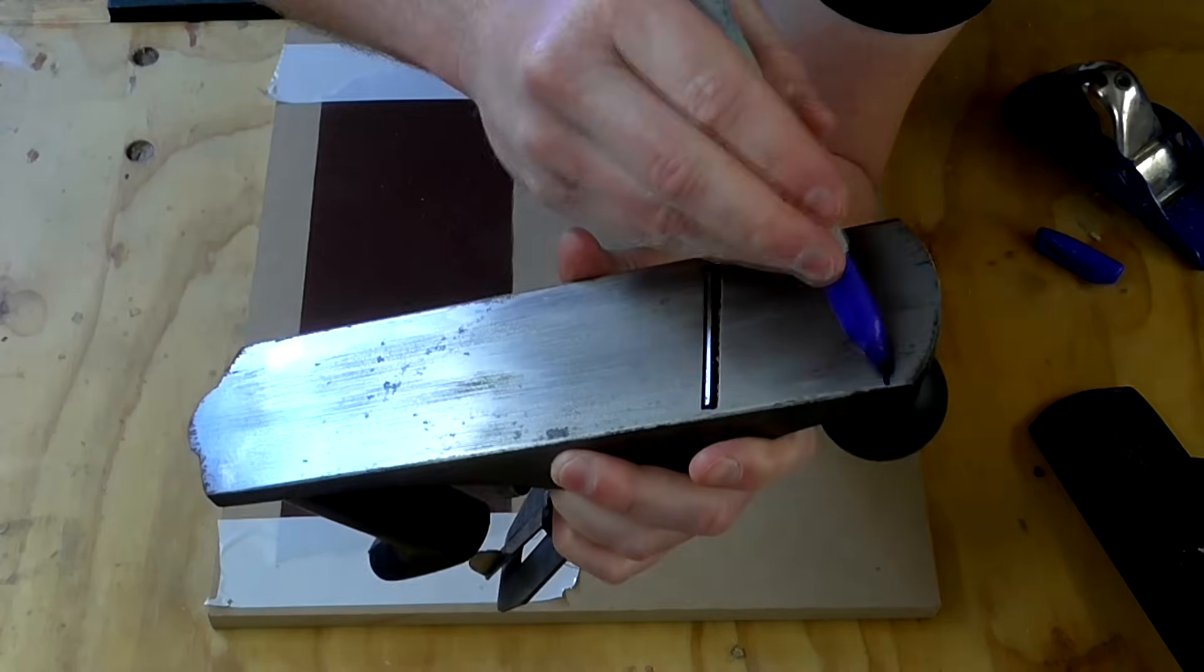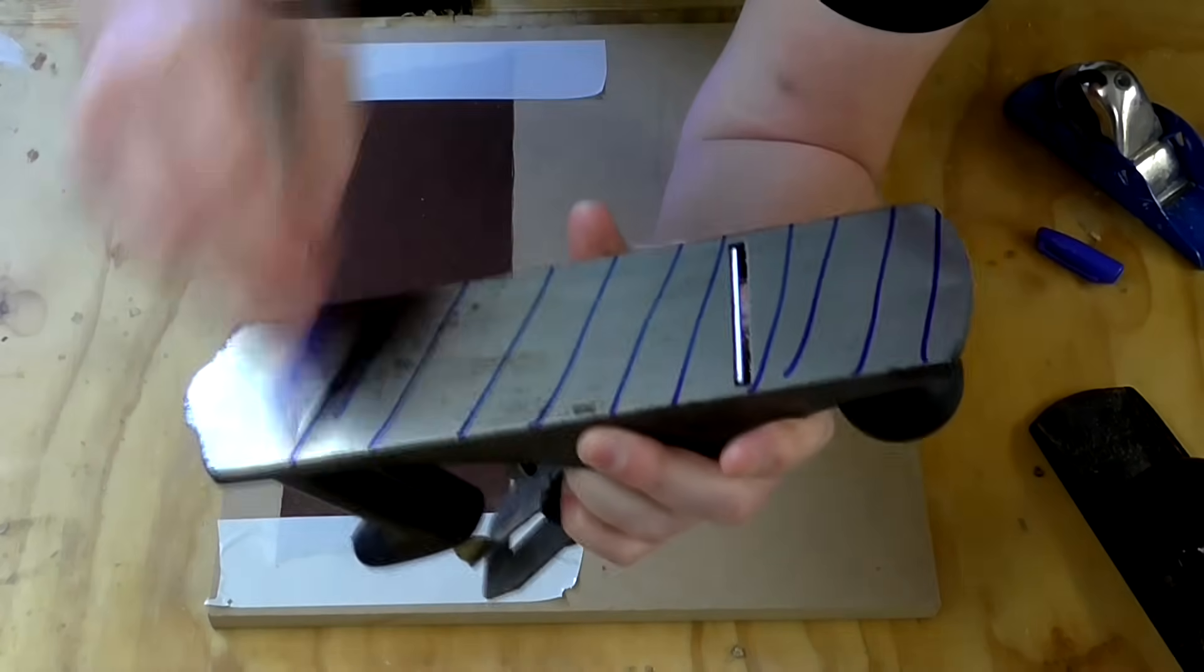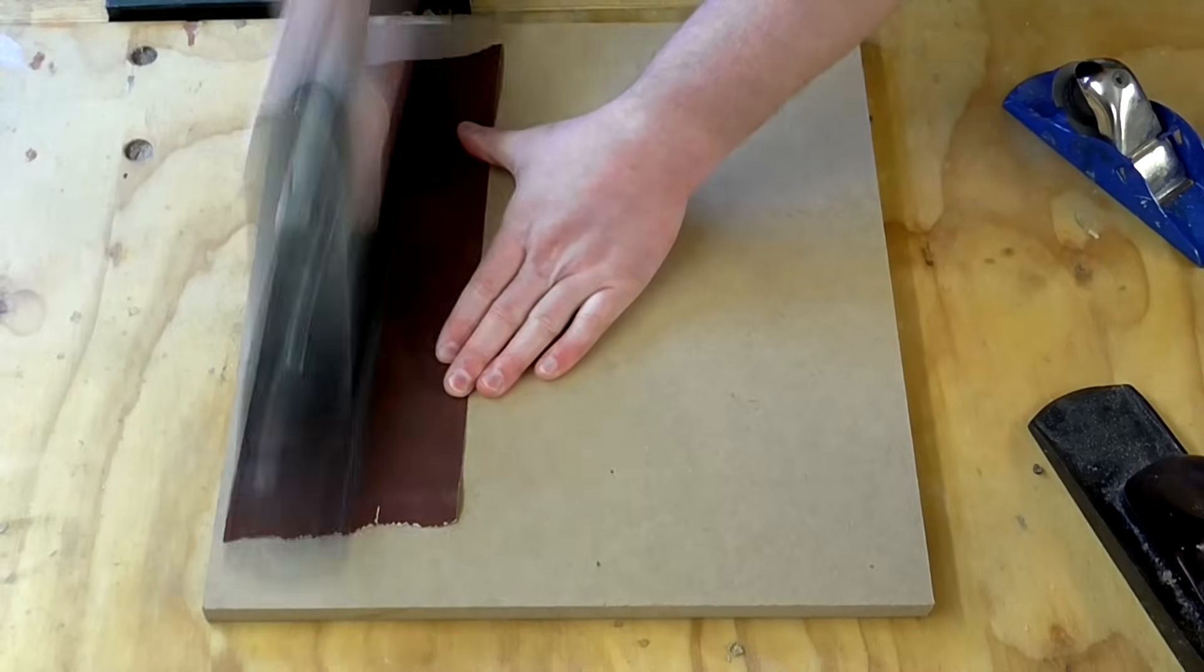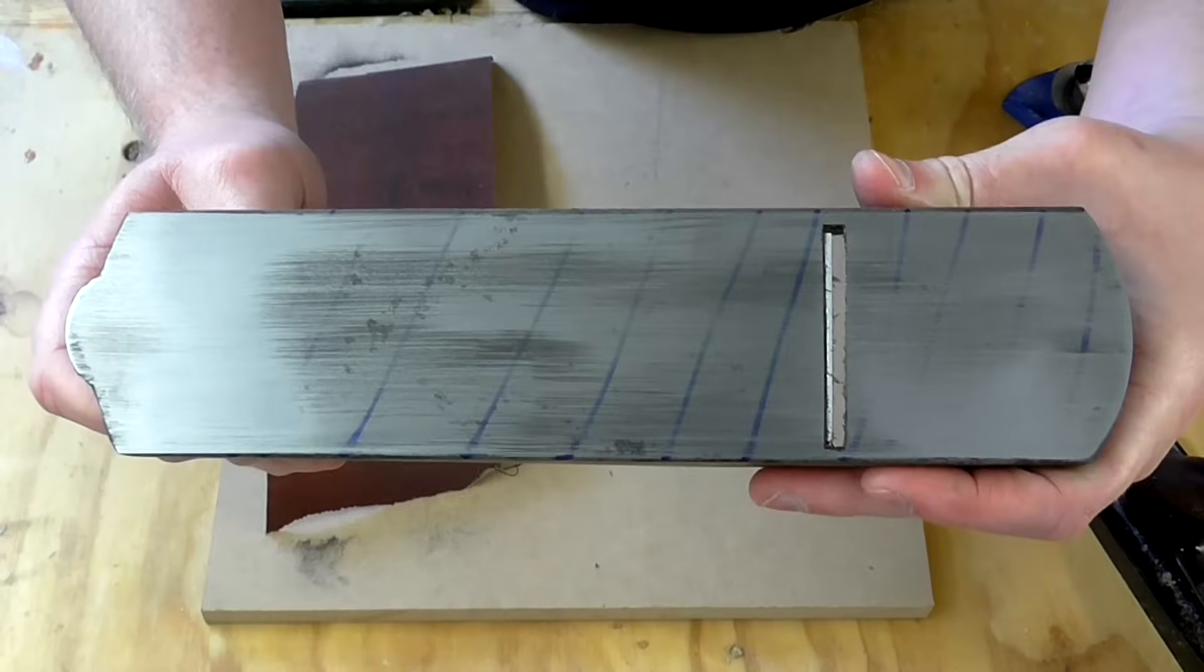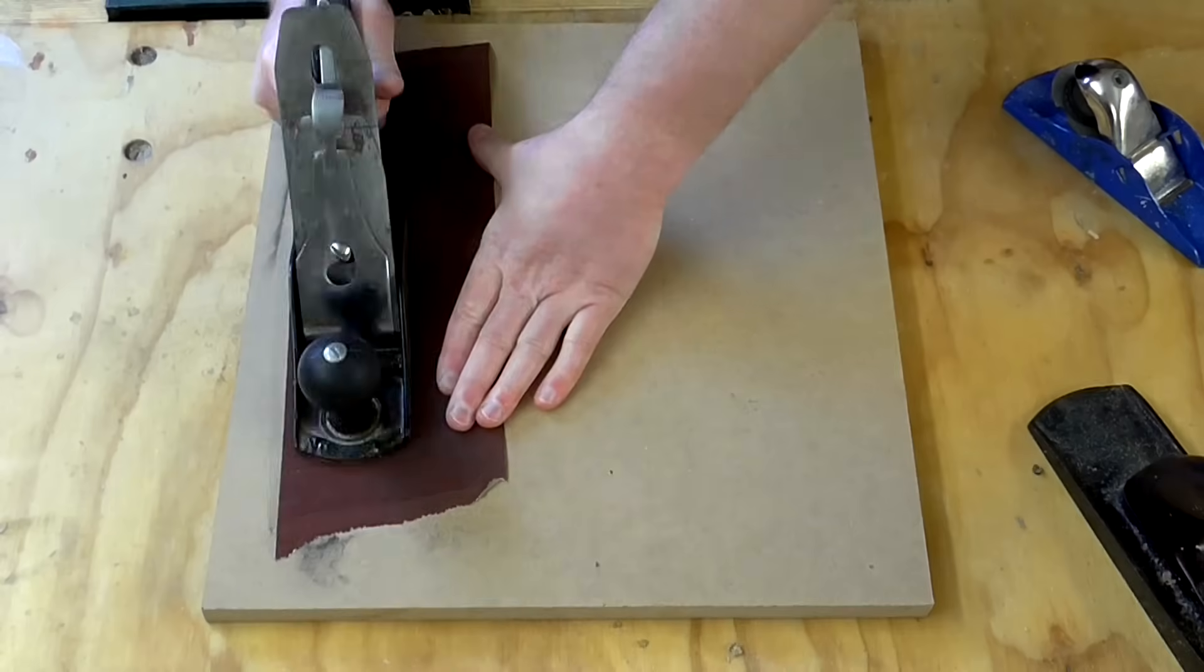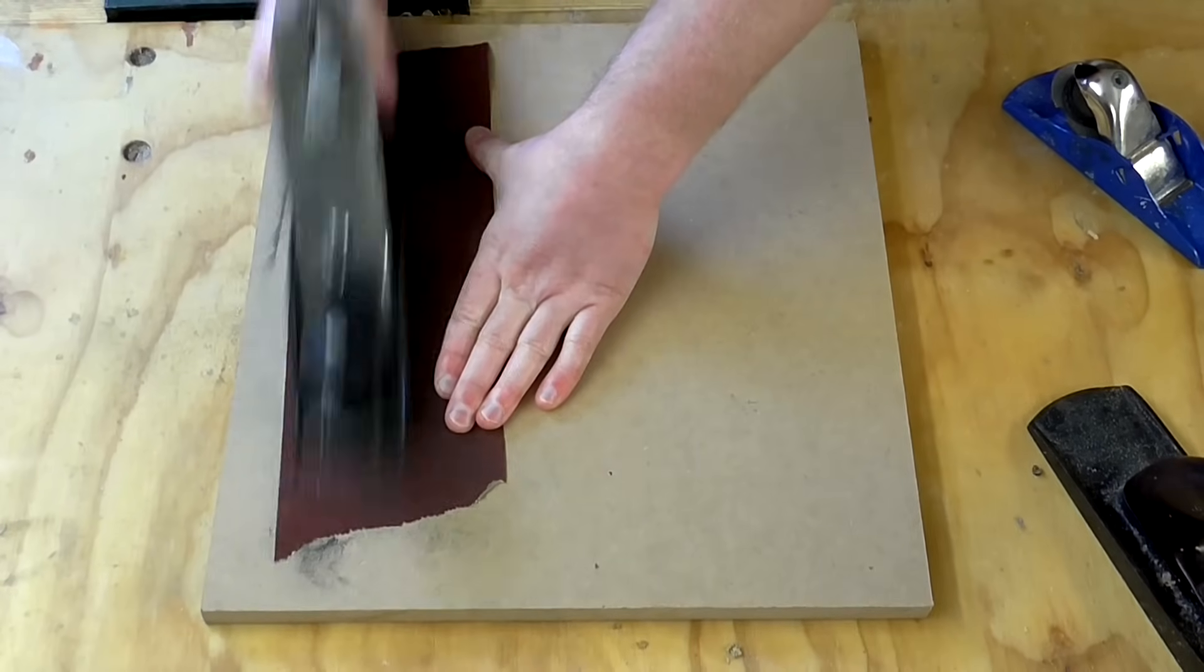Draw some lines on the sole with a sharpie pen from one side to the other all the way down the length of the sole. Then sand the sole and if the pen marks are still visible in some areas that means it's not quite flat so you'll want to do some more sanding.